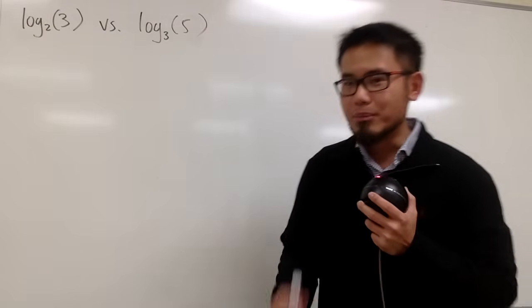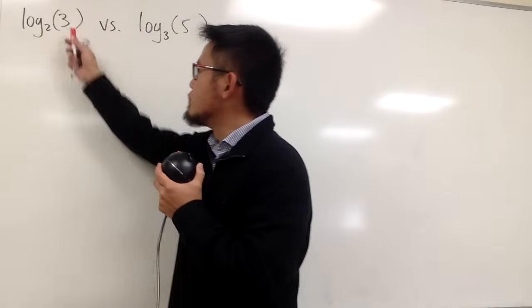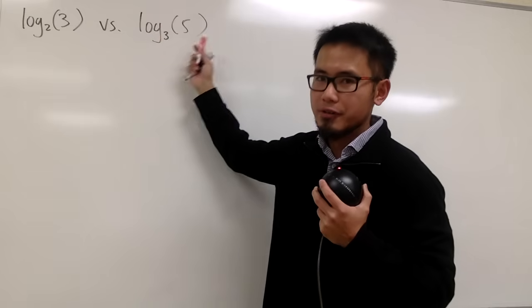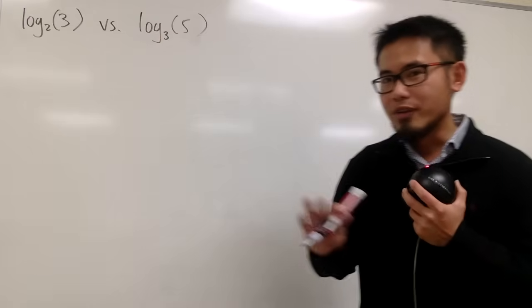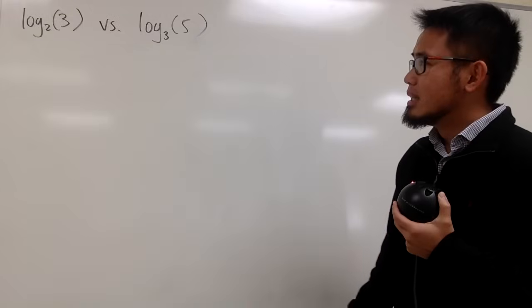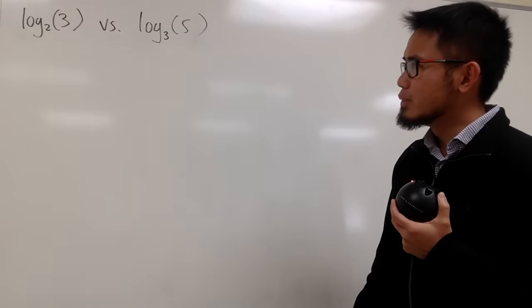Let's do some math for fun. Here, we are going to compare these two numbers. The first one is log base 2 of 3, and the second one is log base 3 of 5. Of course, we will not be using a calculator, nor Wolfram Alpha. We'll just use our mathematical knowledge. Let's see what we can do.